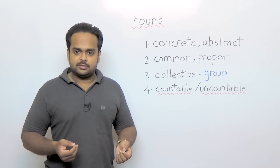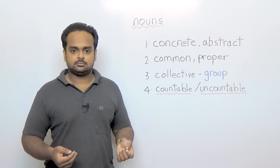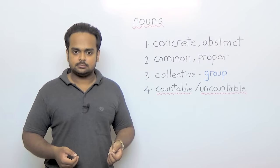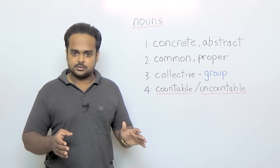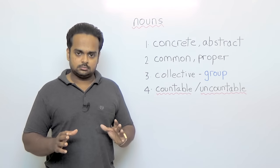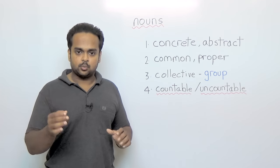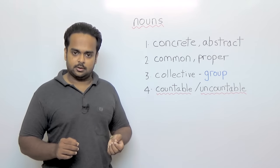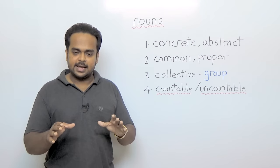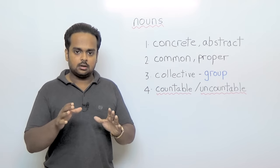Nouns can also be things like watch, t-shirt, etc. And all of these people, places, animals, and things are physical. That means we can see them and we can touch them. So they are called concrete nouns. That means they have a real physical existence.